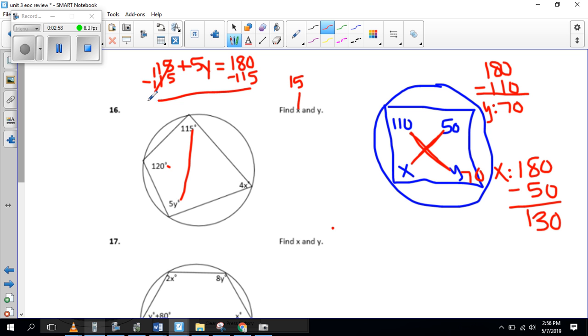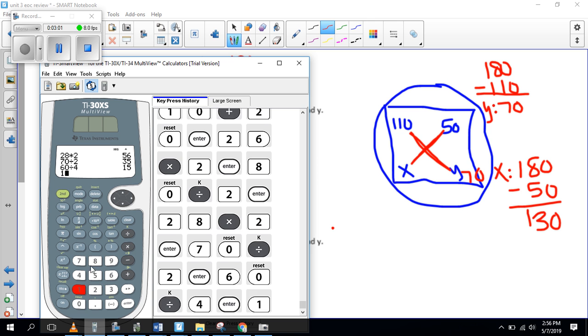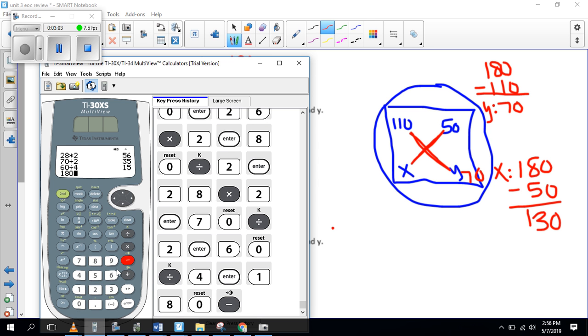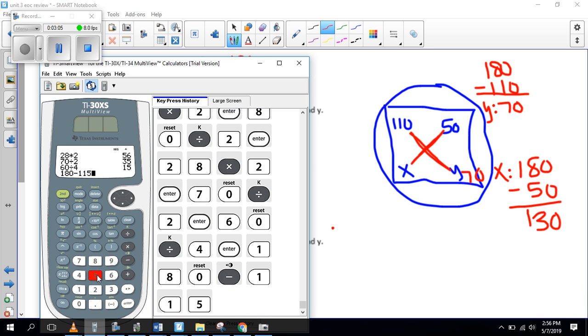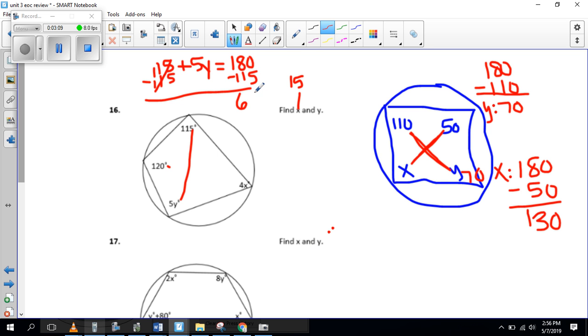So 180 minus 115 gives us 65. So 65 equals 5y. And we divide both sides by 5. We should get 13. y equals 13.